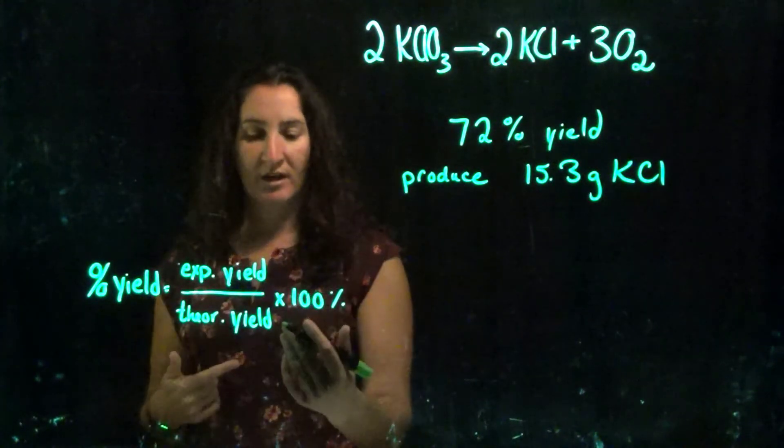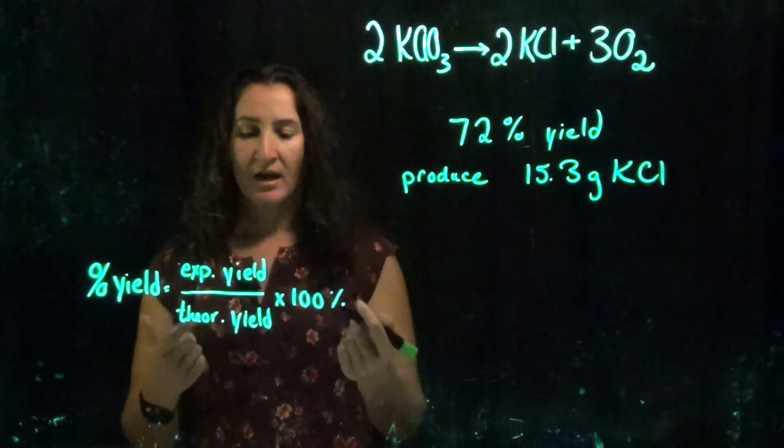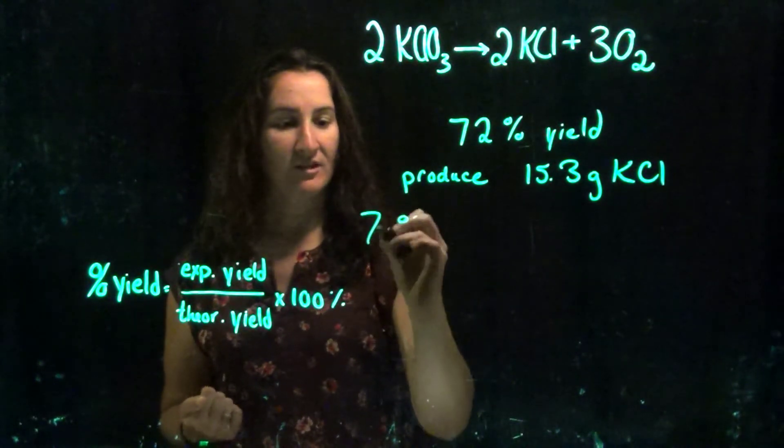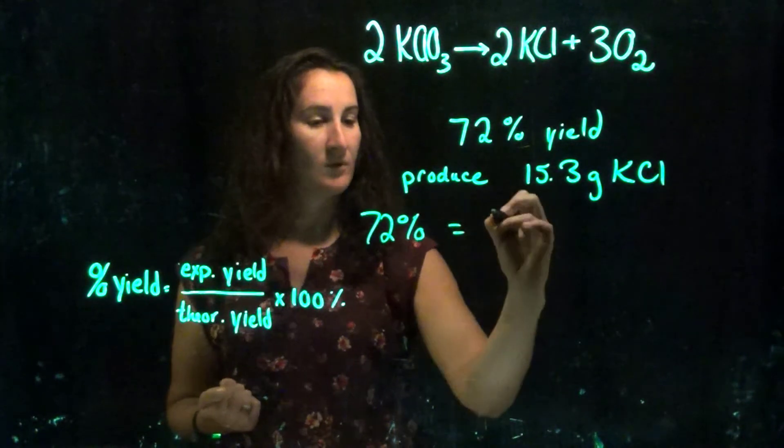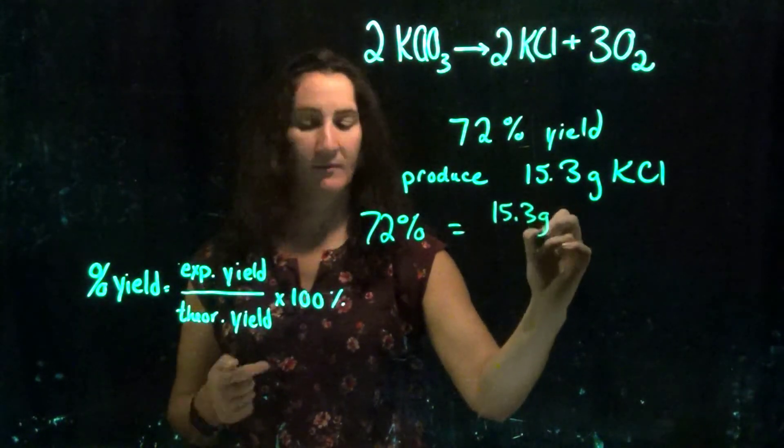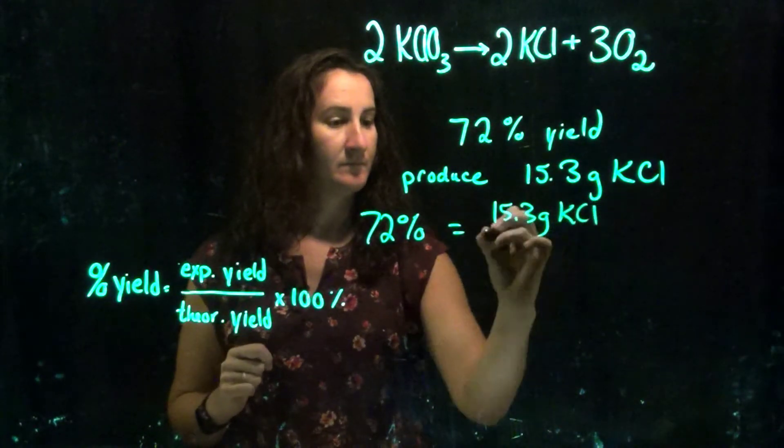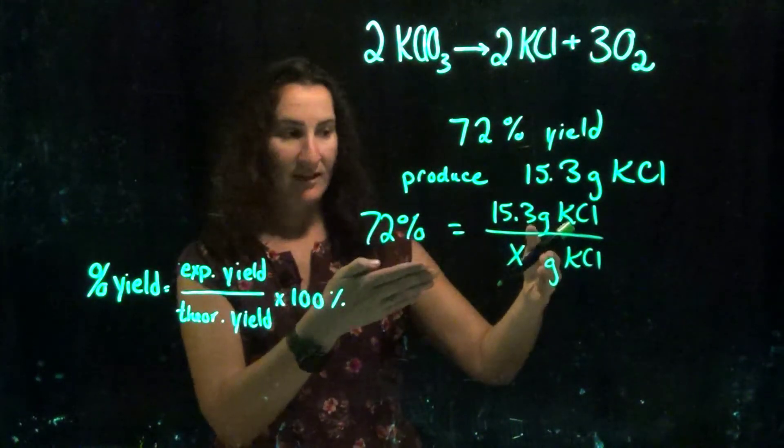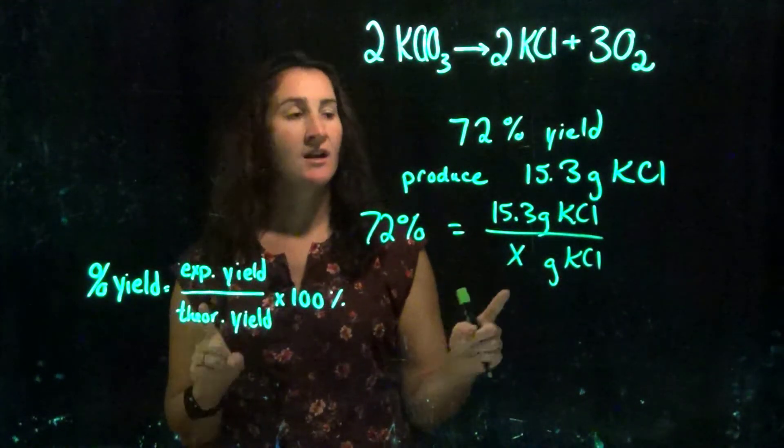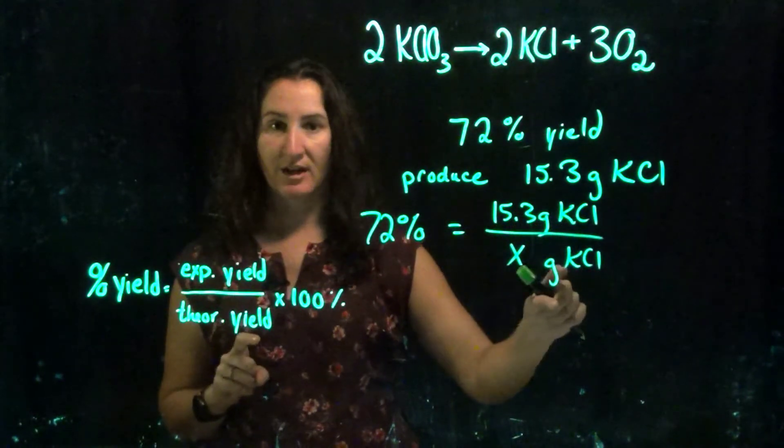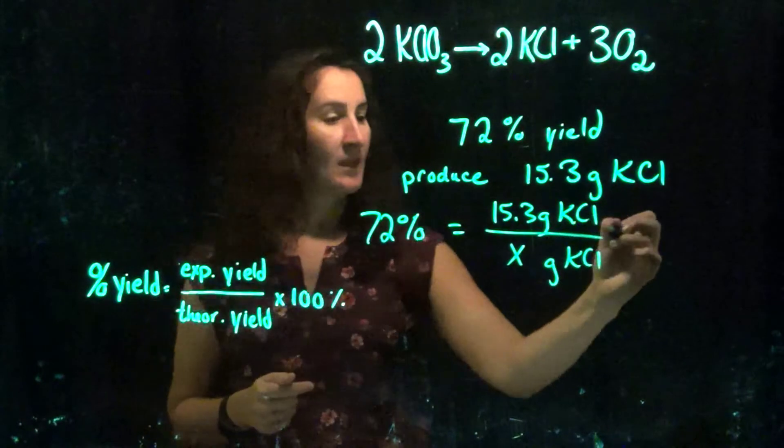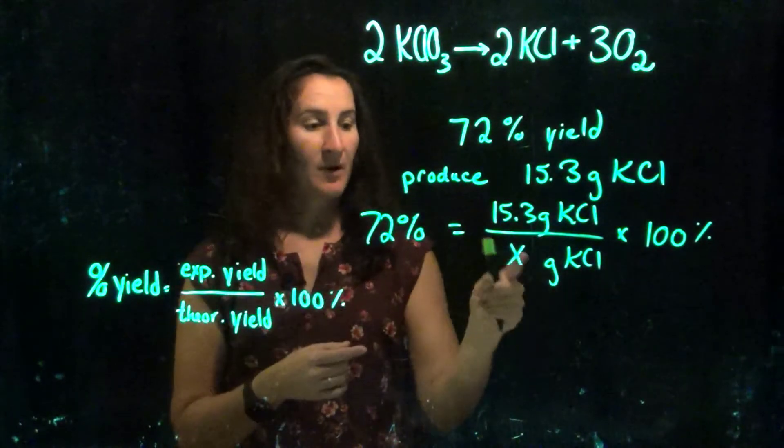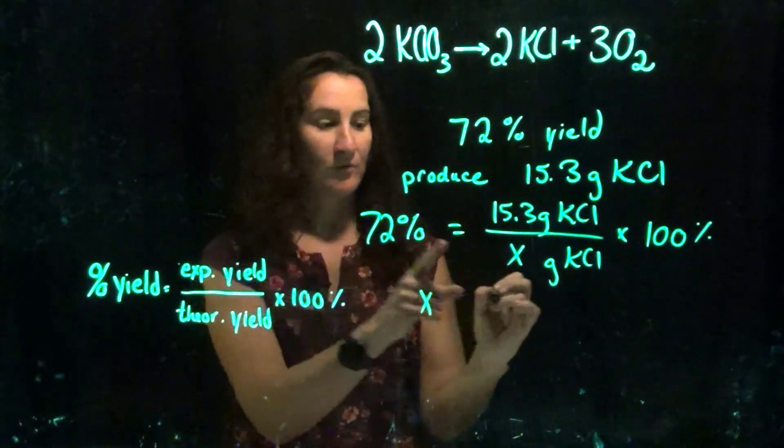So in this case, we're given a percent yield, we're given an experimental yield, that's how much we produced, and I'm asked to solve for the theoretical yield. So in this case, 72% equals 15.3 grams, because that's my experimental yield, over my theoretical yield. And notice my units should have been grams of KCl. The number one mistake I have here is students will put grams of one thing over grams of another. Your units need to be the same. Times 100, with units of percent.